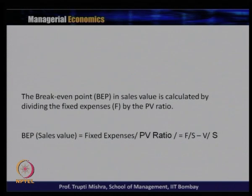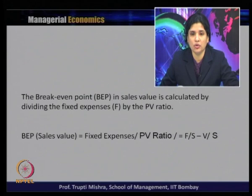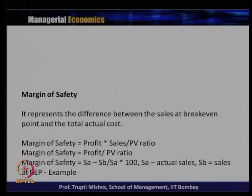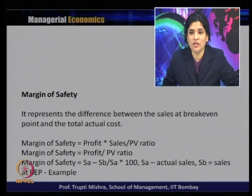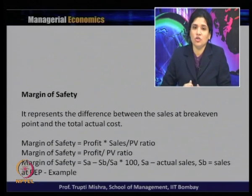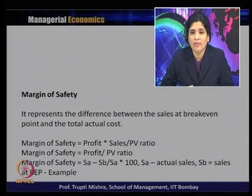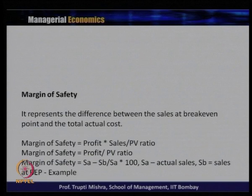The break-even point in sales value is calculated as: BEP (sales value) = Fixed Expenses ÷ PV ratio = F ÷ [(S − V) ÷ S]. The margin of safety represents the difference between actual sales and sales at the break-even point. It can be measured as: (i) Profit × Sales ÷ PV ratio, (ii) Profit ÷ PV ratio, or (iii) (SA − SB) ÷ SA × 100, where SA is actual sales and SB is sales at BEP.